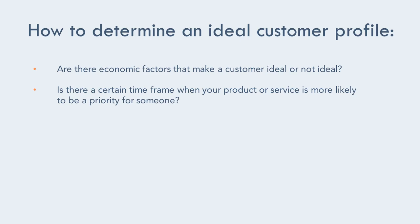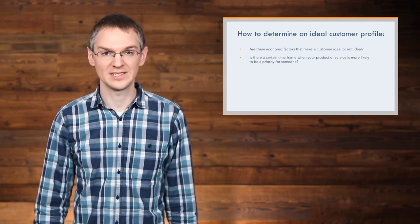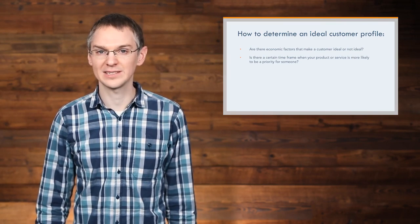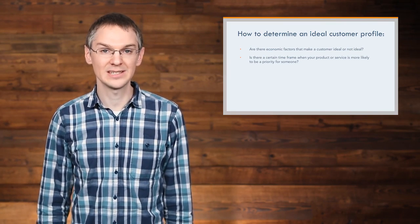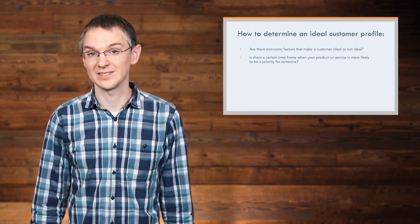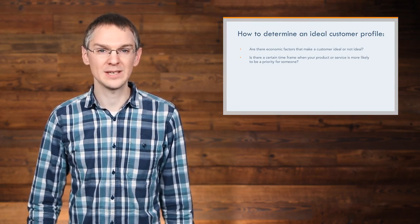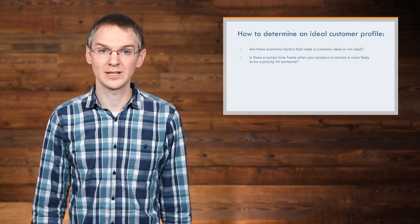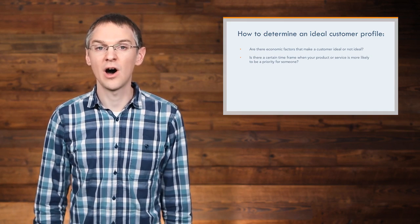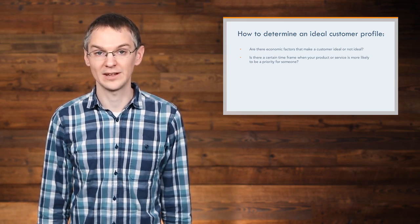Second, is there a certain time frame when your product or service is more likely to be a priority for someone? If you're a B2B seller, there might be certain phases in a company's development or growth when your offering is especially helpful or relevant. Similarly, in a B2C context, your offering might appeal more to people in a particular phase of life. In both B2B and B2C selling, there might be seasonality factors that affect your ability to sell to your prospects. All of this information should be included in your ideal customer profile.